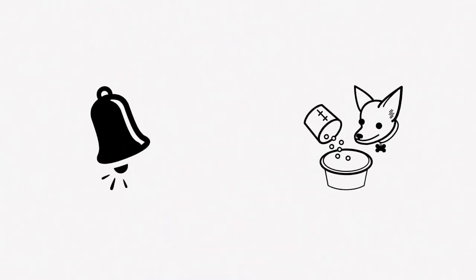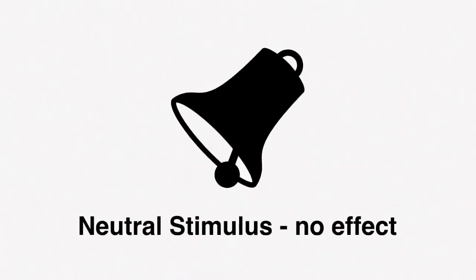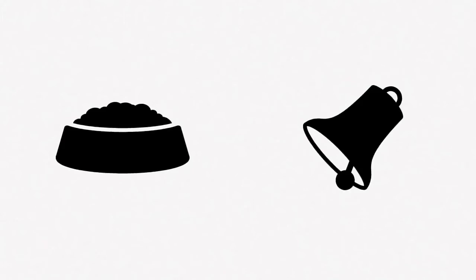He did this by ringing a bell when the dogs were presented with their food. At first he rang the bell and the dog didn't salivate — this was the neutral stimulus. Then he rang the bell and gave the dog some food. This was the conditioning process, as he repeated it many times.